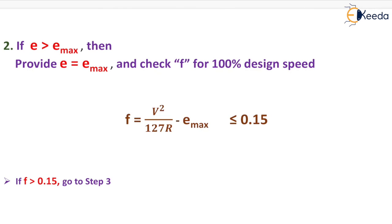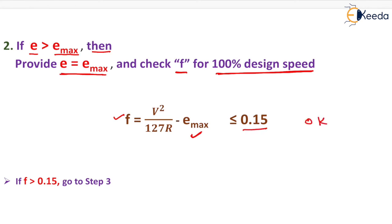Step 2 — if the calculated super elevation is greater than e max, then set e equal to e max and check the value of f at 100% design speed using f = V²/127R minus e max. If f is less than or equal to 0.15, the condition is acceptable; otherwise proceed to Step 3.